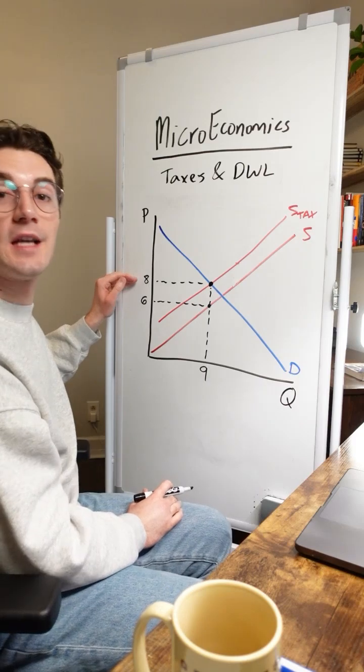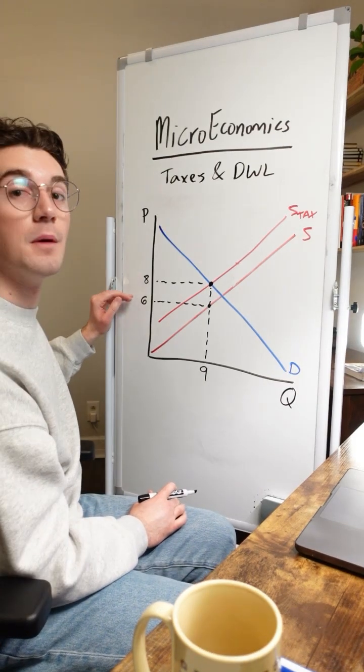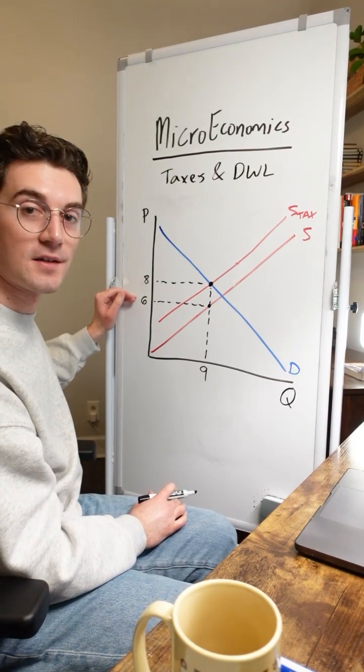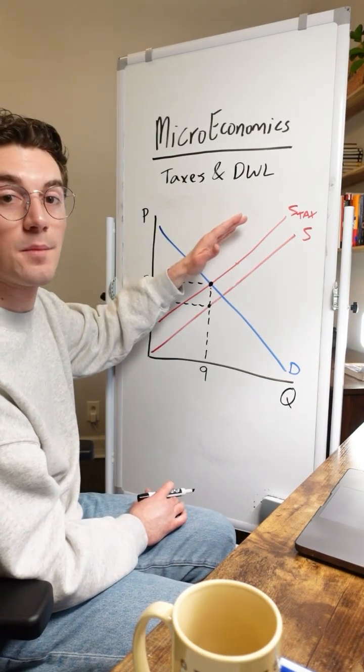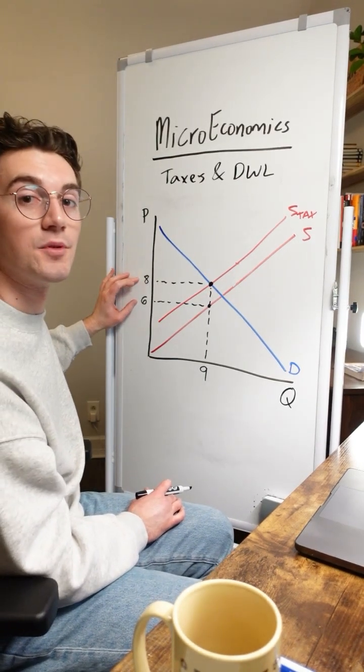What this means here is that with this tax, consumers are paying $8, but producers are only receiving $6, which makes sense because that vertical distance right here is that $2 that we shifted the supply curve up by. This difference right here is the tax per unit.